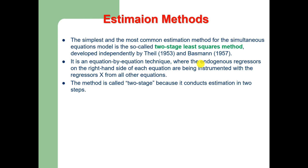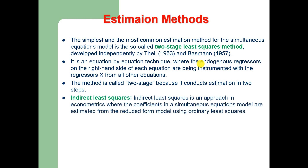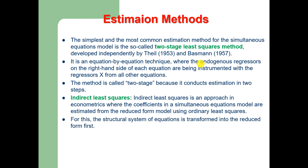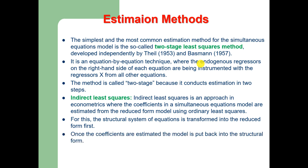This method is called two-stage because it conducts estimation in two steps. Another method of estimation is Indirect Least Squares, which is an approach in econometrics where the coefficients in a simultaneous equations model are estimated from the reduced form model using OLS. The structural system of equations is transformed into the reduced form first, and once the coefficients are estimated, the model is put back into the structural form.